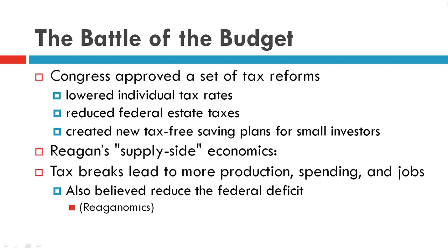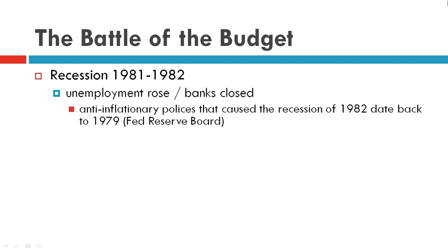It was believed this trickle-down approach would create jobs and reduce the federal deficit. Now, there was a recession in 1981 and 1982. As the economy slipped and unemployment rose and banks closed, the anti-inflationary policies that caused the recession had been set in motion beforehand.